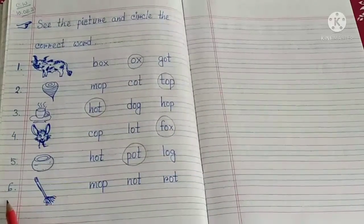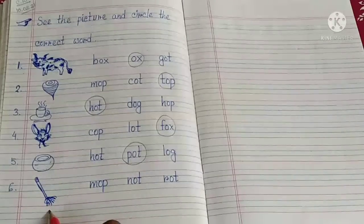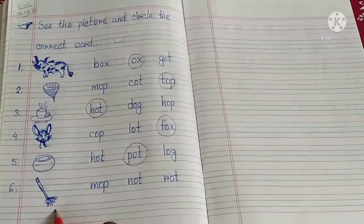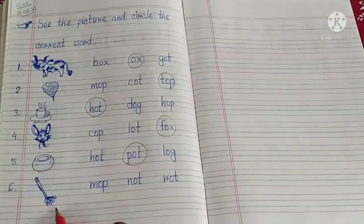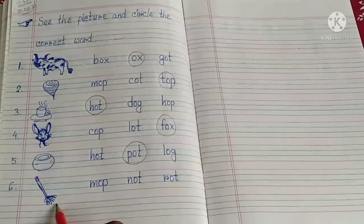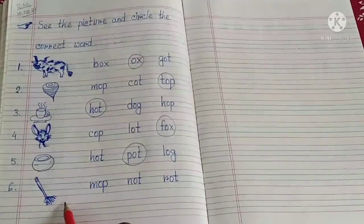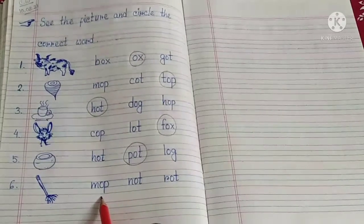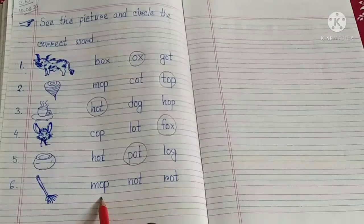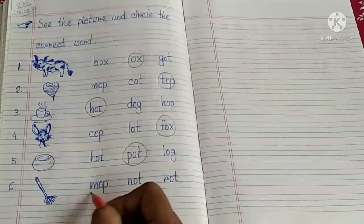Next, number 6. What is this? This is called mop. So what is the spelling of mop? M-O-P, mop. Let's find it out. M-O-P, mop. Right, let's circle it.